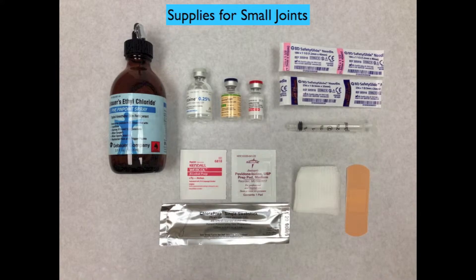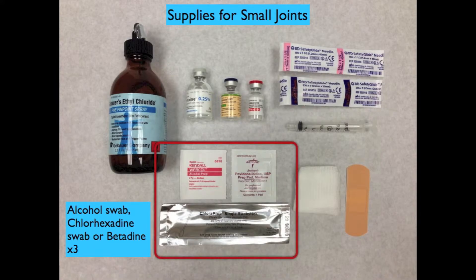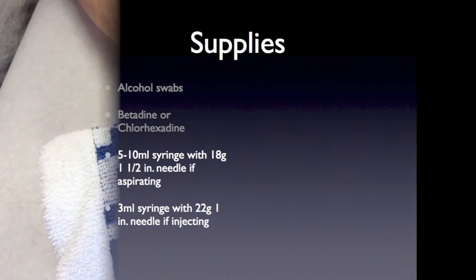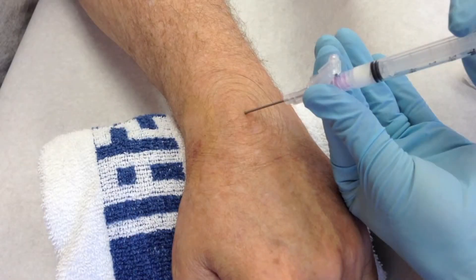To aspirate a ganglion cyst you will need the standard injection supplies, including alcohol swabs and betadine or chlorhexidine to disinfect the skin. Since you need to create significant negative pressure to suck out the very thick fluid, you should use a 5 or 10 cc syringe for the aspiration and an 18 gauge needle.